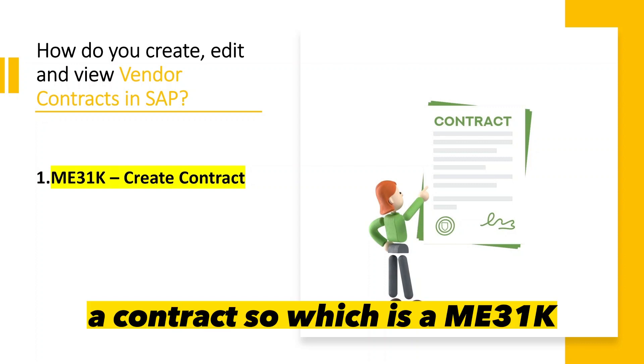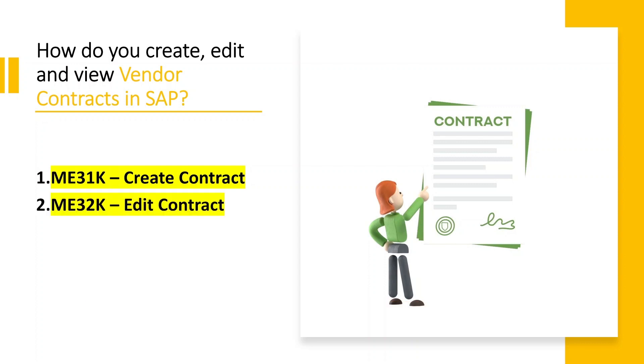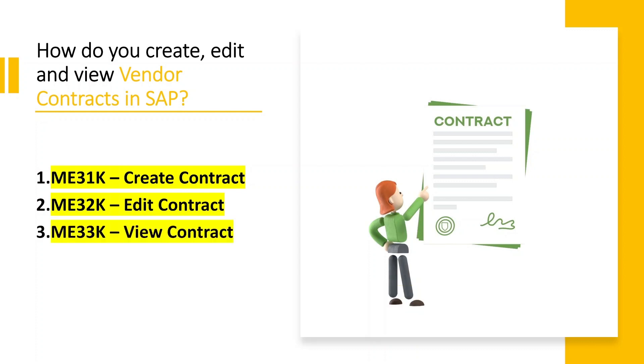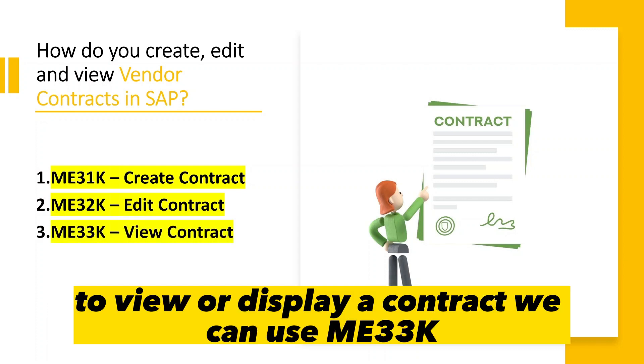The T-code to create a contract is ME31K. To edit a contract we can use T-code ME32K. To view or display a contract we can use ME33K.